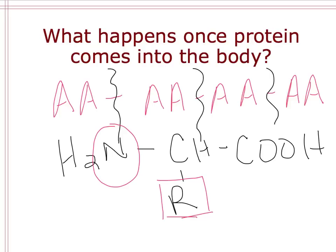Proteins come into the body as long chains of amino acids, and our body catabolizes them — breaking them down into smaller component parts to get the different elements needed. Then via anabolism, it builds back up what it actually needs, like immunoglobulins, lipoproteins, hemoglobin, or whatever other kinds of protein the body requires.